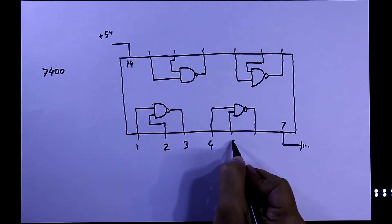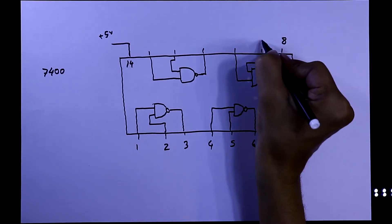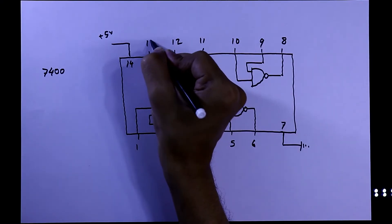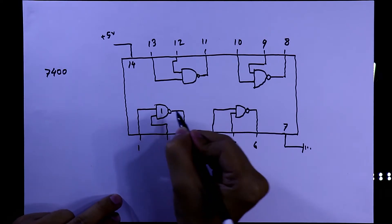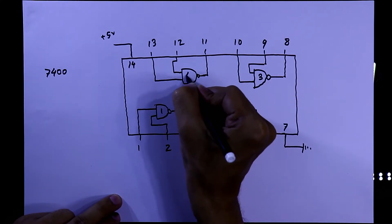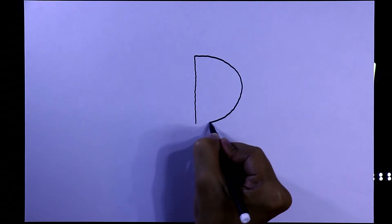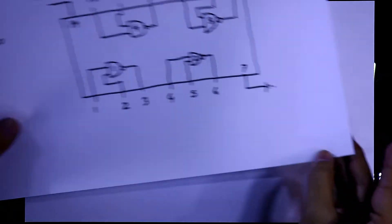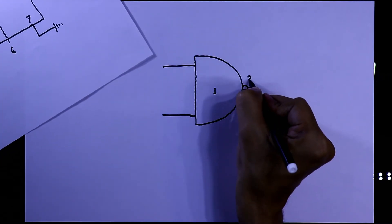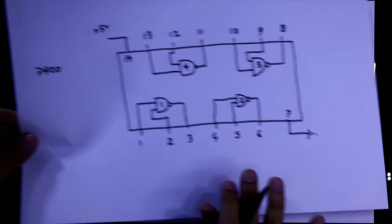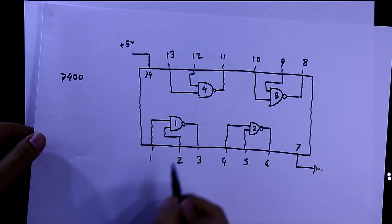You can see the inputs and outputs of the other NAND gates similarly. Here is the first NAND gate, second, third, and fourth. Now I will draw the practical circuit. Here is NAND gate 1. The output is pin number 3 and both the inputs are pin numbers 1 and 2.